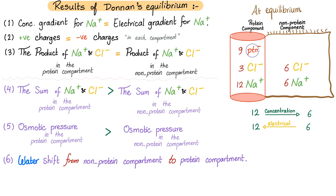The product, oh multiplication. Ooh, sodium and chloride in the protein compartment equals the product of sodium and chloride in the non-protein compartments. Let's verify. Three times 12 equals 36. Six times six equals 36. Beautimus.